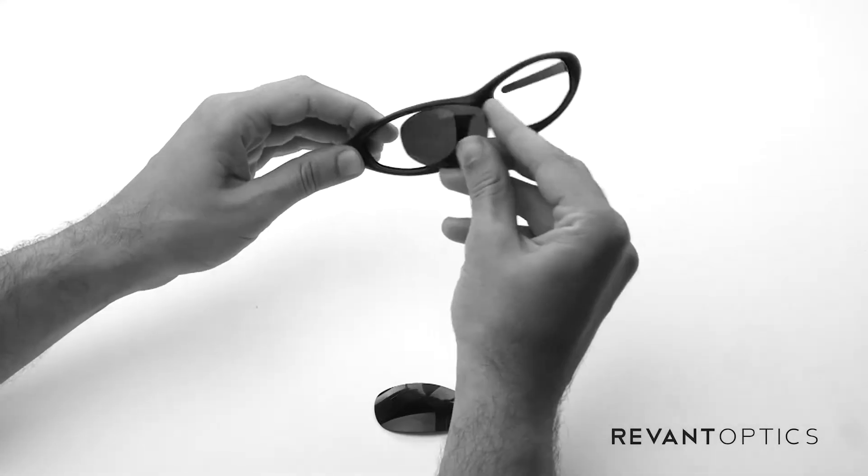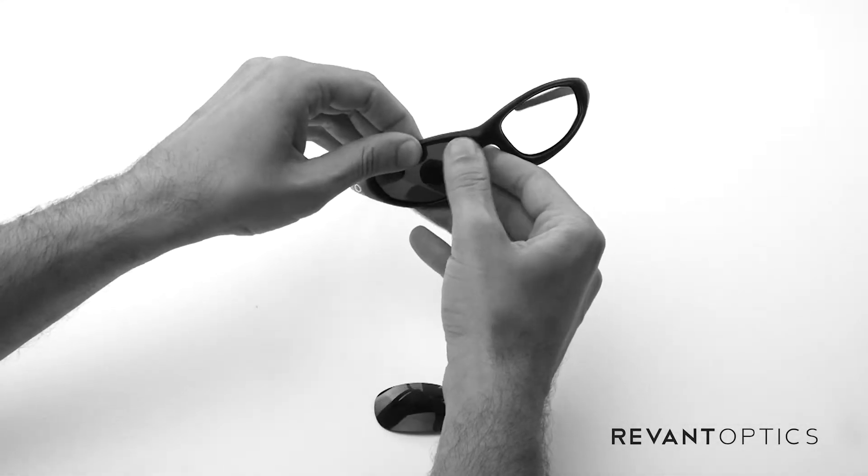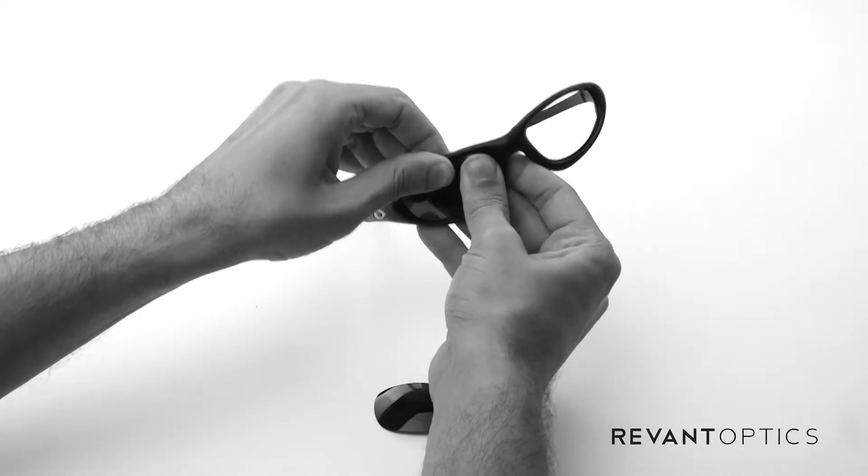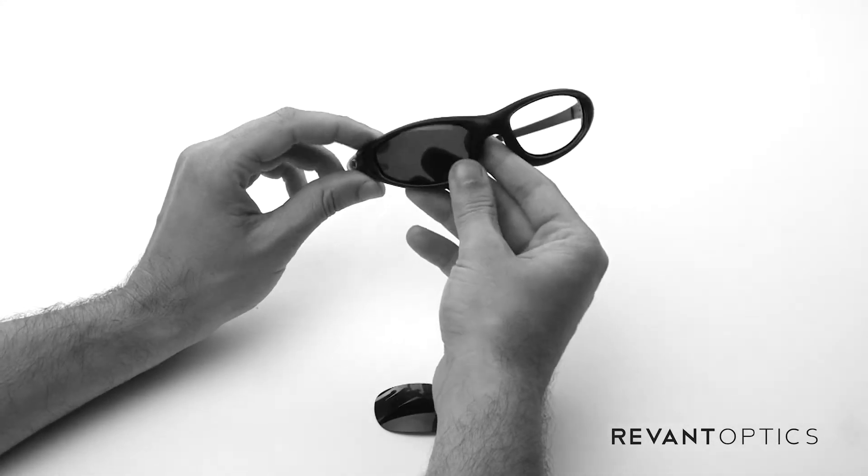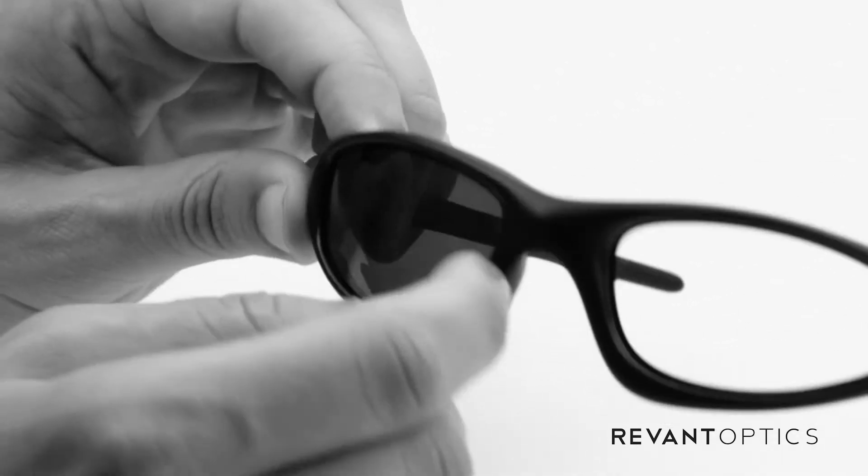To install the lenses, slide the edge into the outside groove and then push with your thumbs to pop them right in. Again, you're going to hear that popping noise. It's going to freak you out, but don't worry about it. That just means it's popping right back into place.